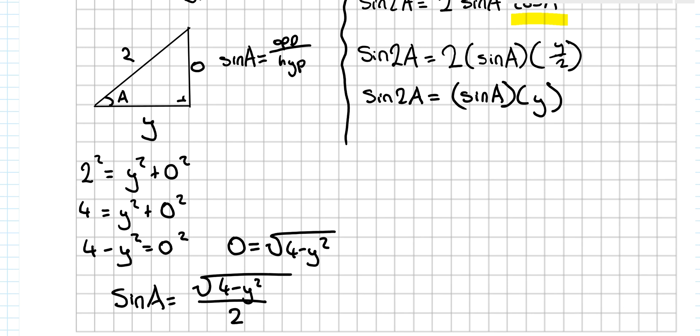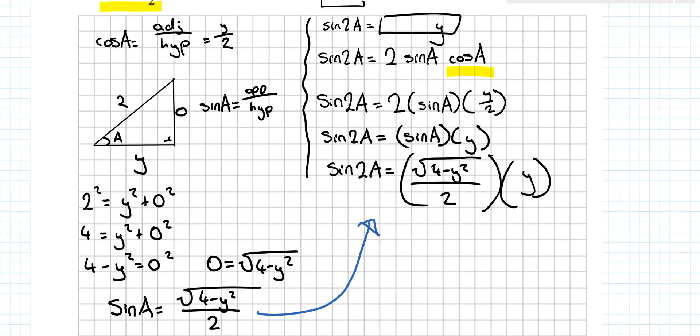So now I can sub that back in here. And I get sin(2A) is equal to square root of 2 minus y squared all over root 2 times y. I think that's good enough for your answer, but it might be nice to just finish it off by making it look a little bit neater. Remember, this is y over 1. So I'm multiplying the two fractions together top by top, bottom by bottom. What do you end up with? y times square root of 2 minus y squared all over 2.